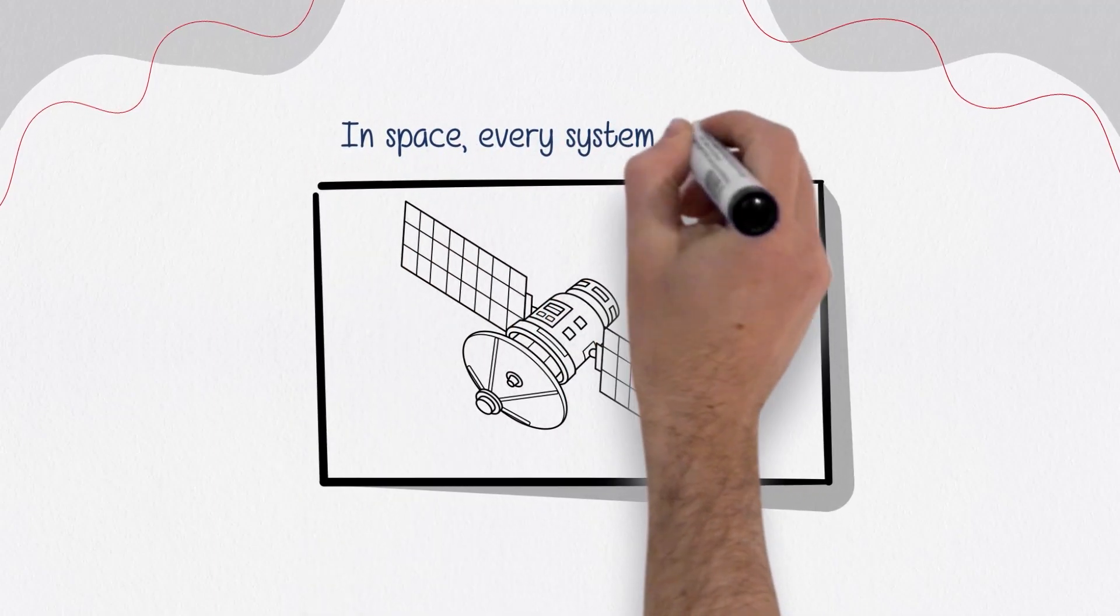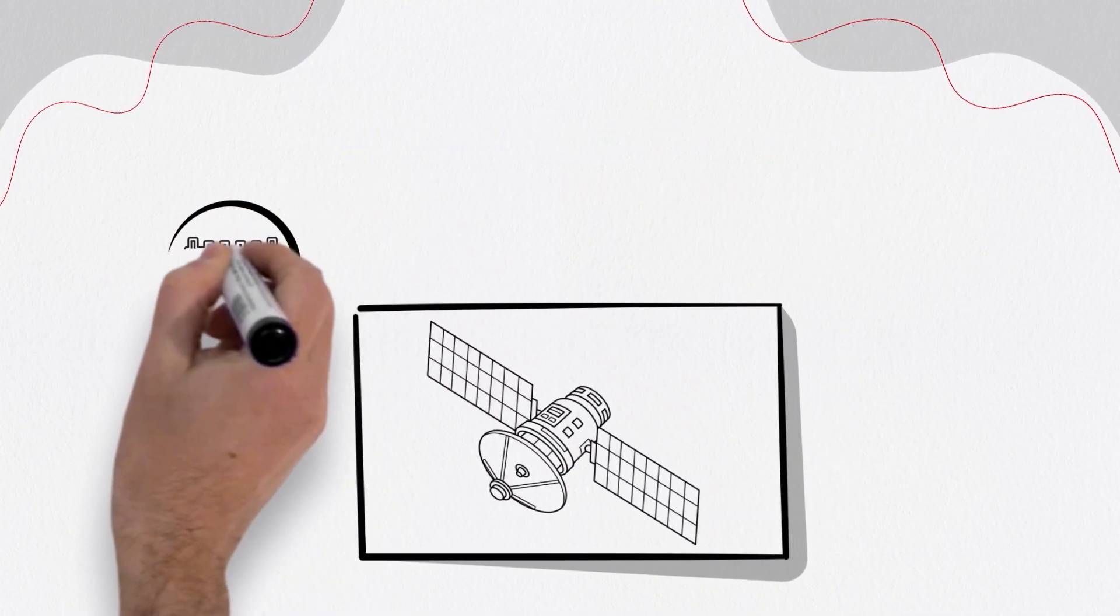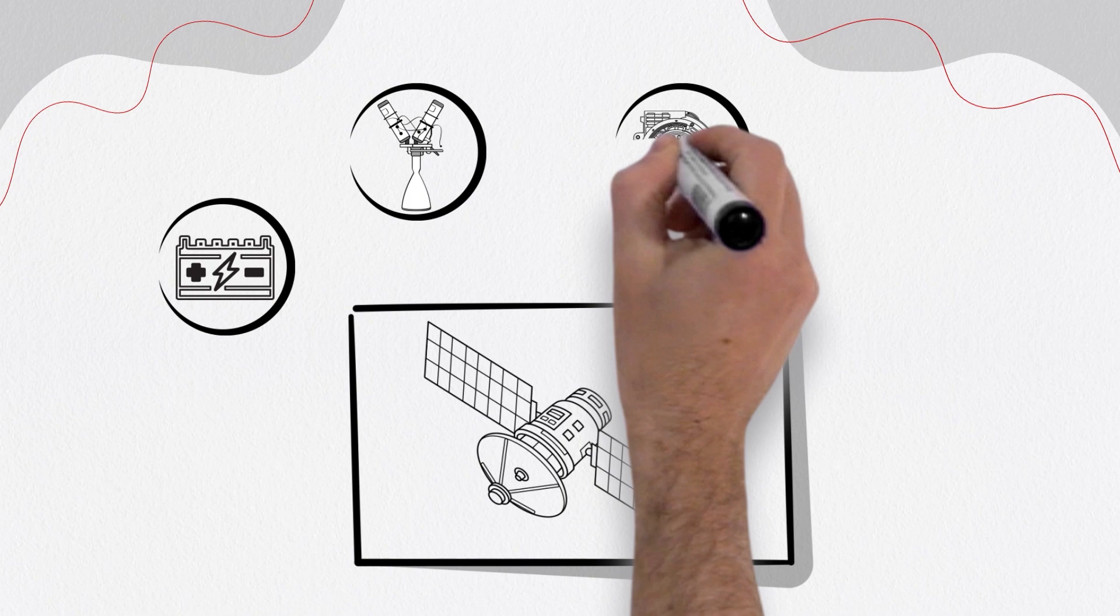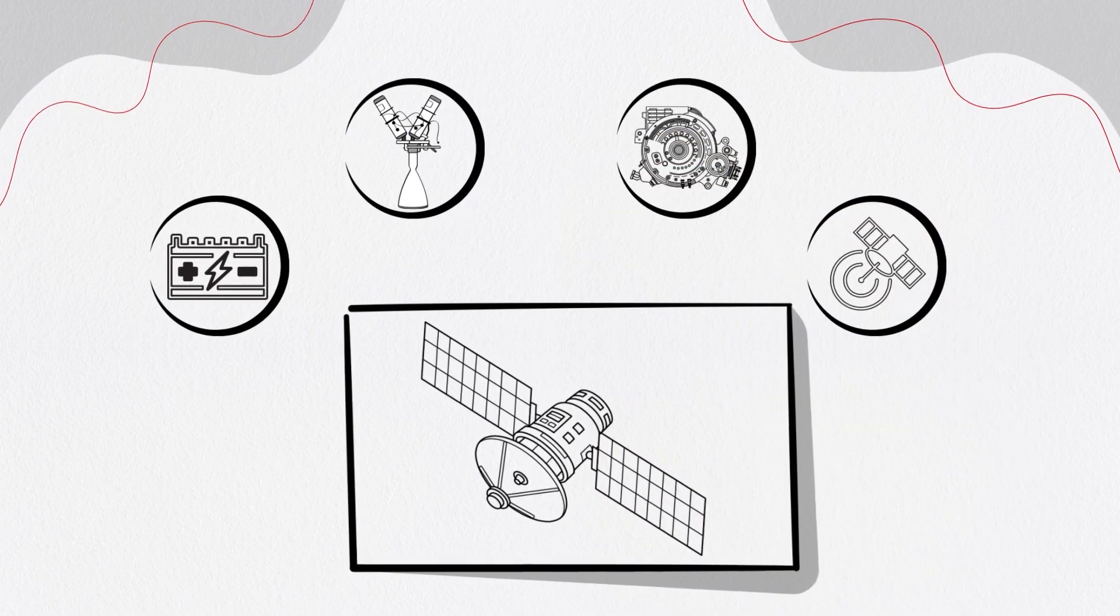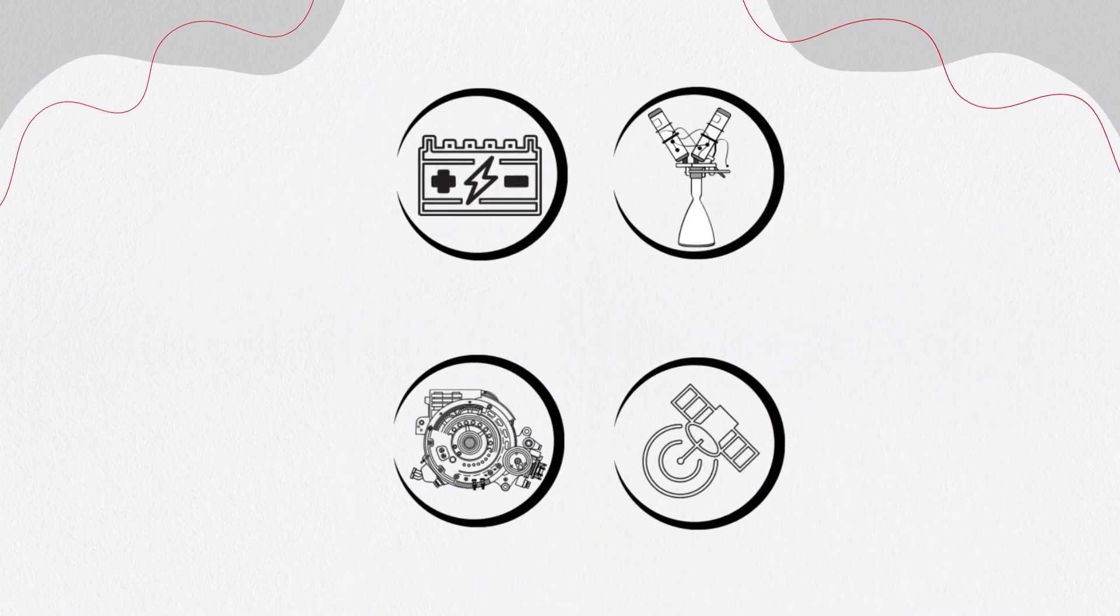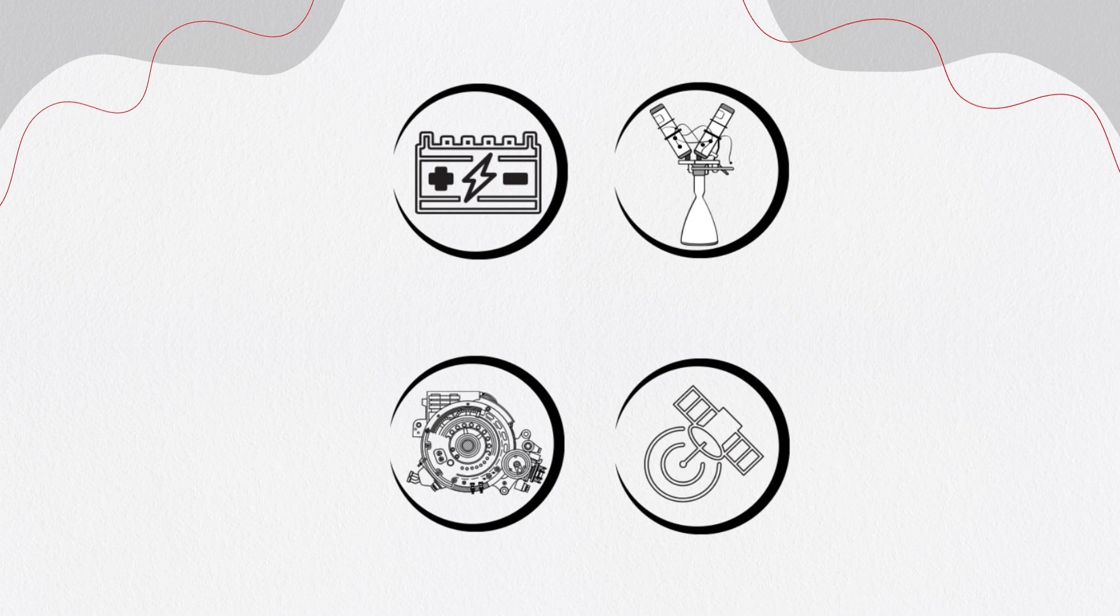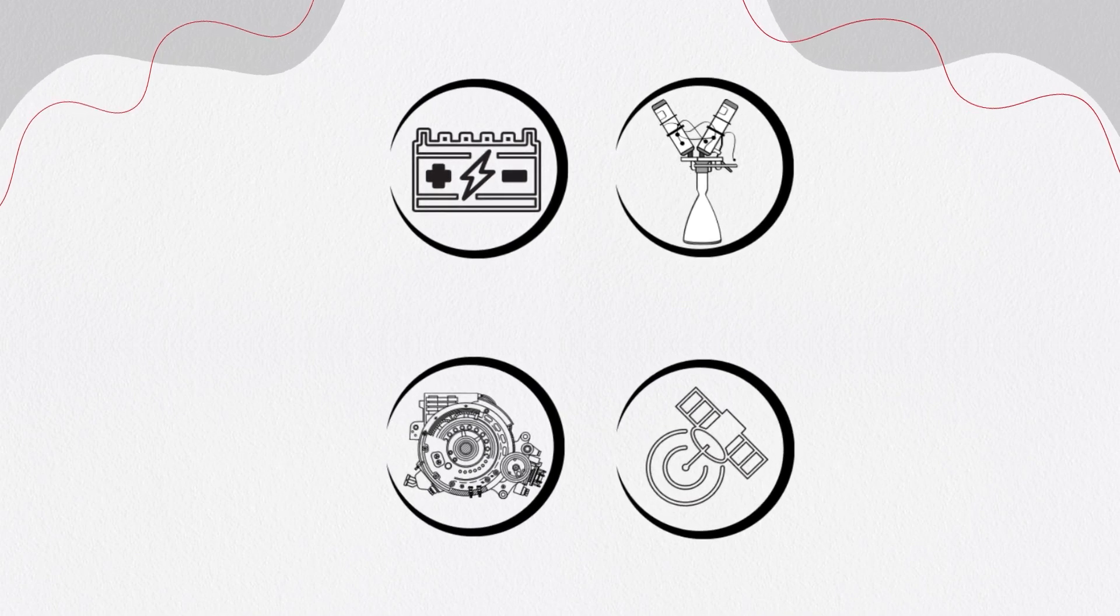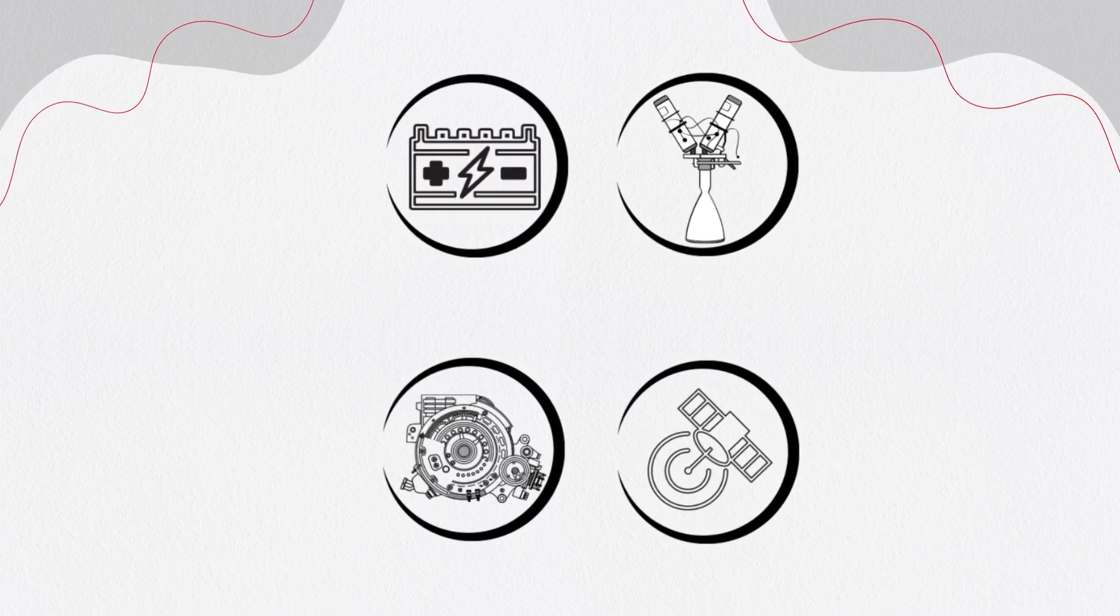In space, every system matters. Power, propulsion, thermal regulation, and communications operate in real time. However, traditional models minimize and trivialize these elements, overlooking the cumulative importance of subsystem level models.